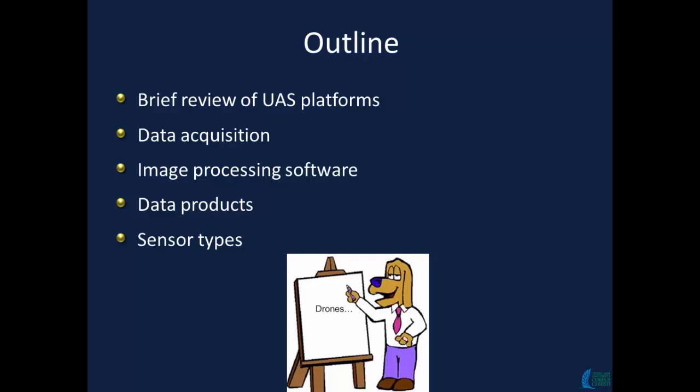A little overview on UAS platforms — the basic types, if you're not familiar, so this is a very broad summary. Then data acquisition, which we'll see later this afternoon — things we have to think about when we fly and collect data with UAS or drones. The main focus is the image processing software, which is equally as important as autonomous technology development for mapping and precision ag. Some examples of data products, and then I'll end with sensor types.